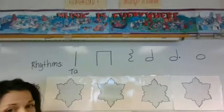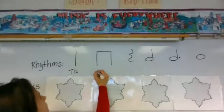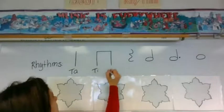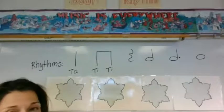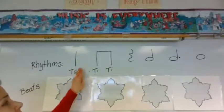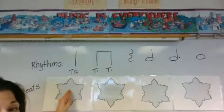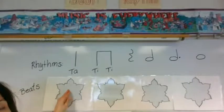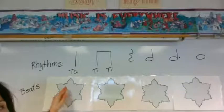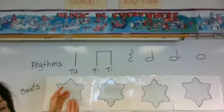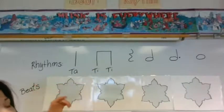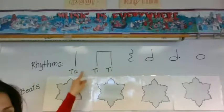What about this rhythm? Tee-tee. Just like ta, tee-tee is a one beater. It only takes up one snowflake. It's two sounds on one beat. When we see it, we clap twice and say tee-tee. It's a one beater, just like ta.